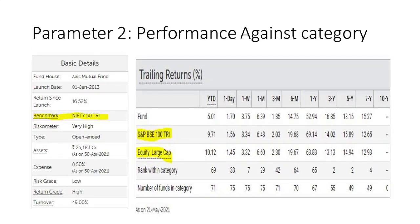There is a fund in the category. We will see how the fund is selected. We will see the Axis Bluechip fund. The benchmark is Nifty 50 TRI. This is the value research website — the return is included in the chart.